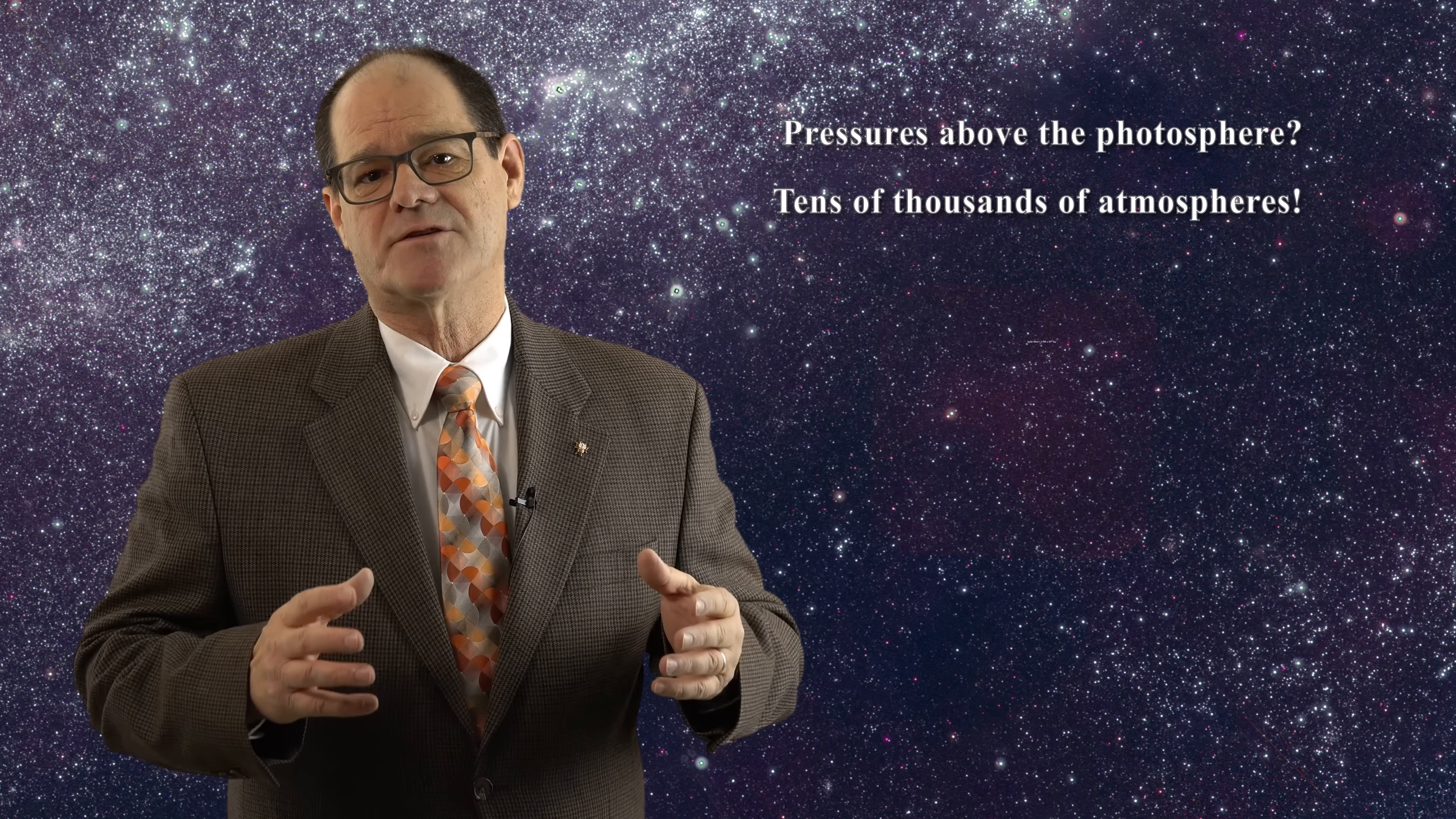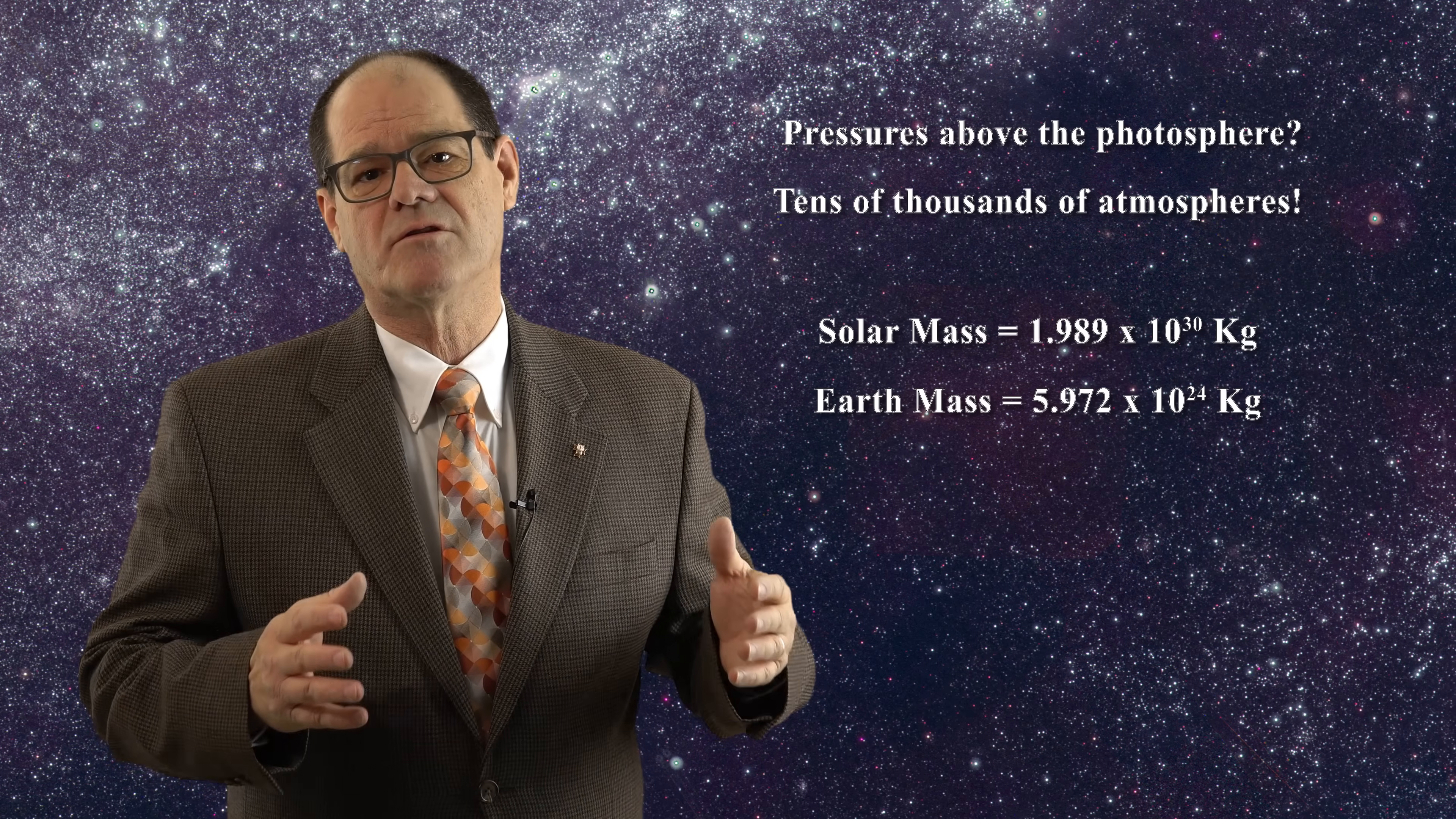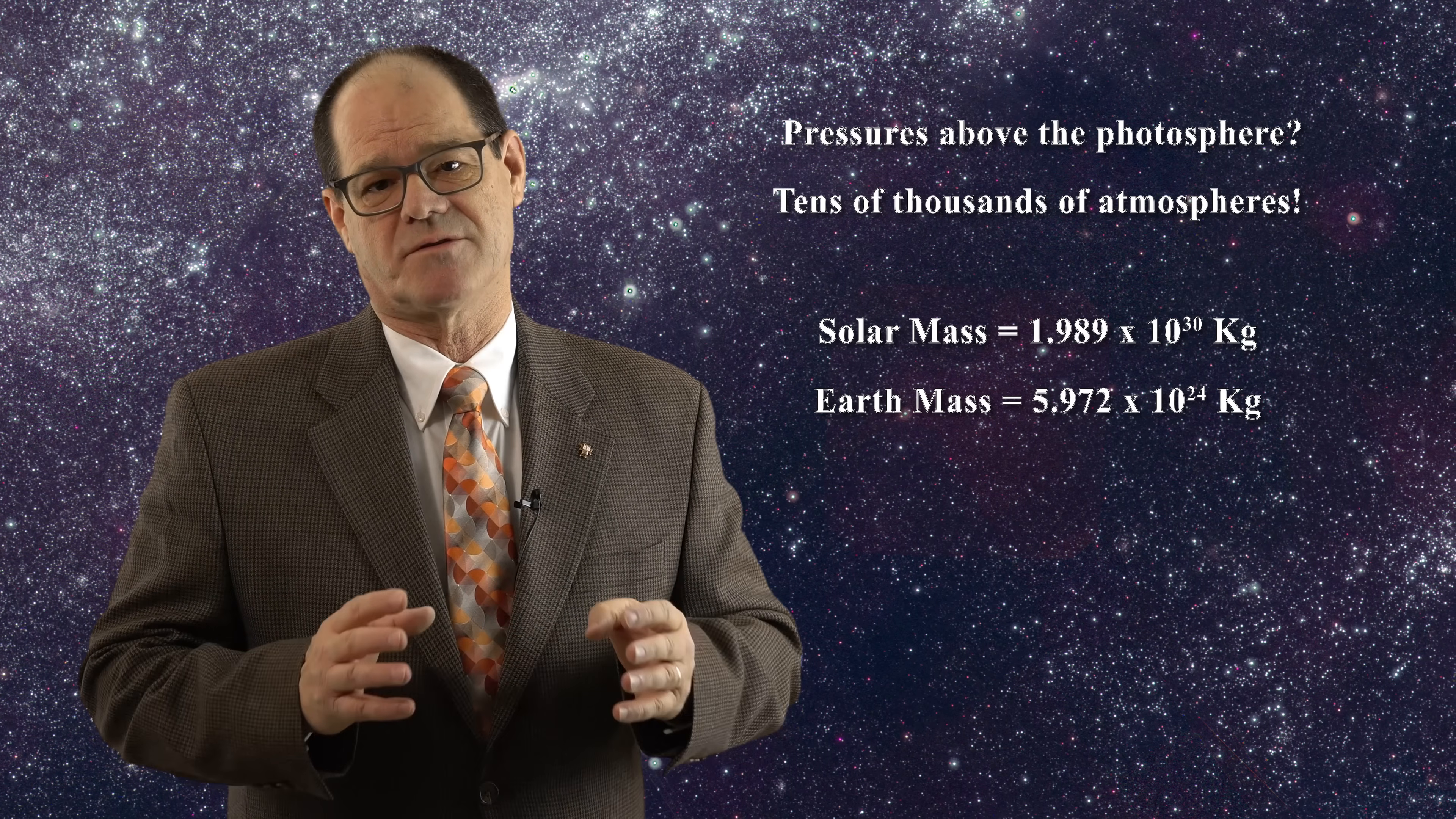The Sun has a mass which is about 300,000 times greater than the mass of the Earth. It is reasonable to infer that the solar atmospheric pressure will be many thousands of times greater than that of the terrestrial atmosphere.